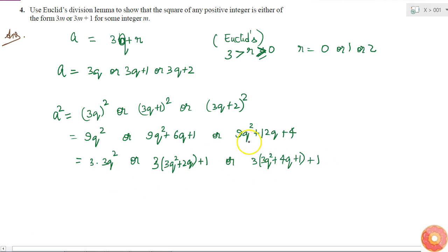When I use Euclid's division lemma, q is an integer. So what does that mean? This means that 3q² is an integer. I can call it as my M.